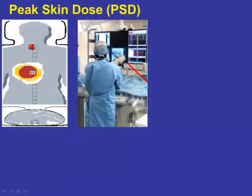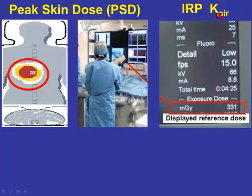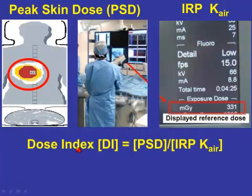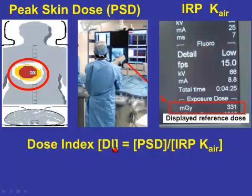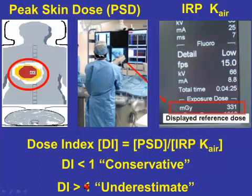Now, if you do a scientific study, you can estimate, calculate, or measure the true peak skin dose. You can also look at the number that your machine is giving you — this IRP kerma rate — and therefore you can quantify a dose index. The dose index is the peak skin dose divided by the IRP air kerma value, both of which are measured in gray. When I teach residents now, I like to say forget formulas — tell me what the formula means. If the number is less than one, you are overestimating the true peak skin dose — you're being conservative. And if the dose index exceeds one, you're underestimating the true peak skin dose. So numbers less than one are good news, more than one are bad news.